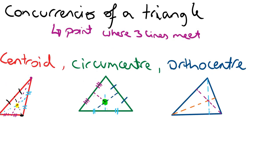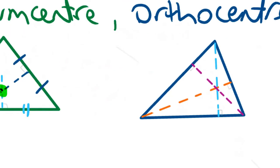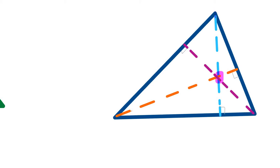The last one is the orthocentre, which is the point of intersection of the altitudes of the triangle. So just to recap: the centroid is the point of intersection of the three medians, going from the vertices to the midpoint of the opposite side. The circumcentre is the point of intersection of the three mediators — the perpendicular bisectors of each edge. And the orthocentre is the point of intersection of the three altitudes.